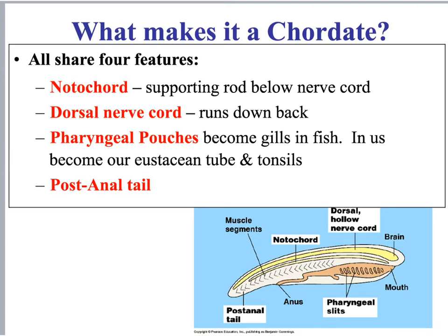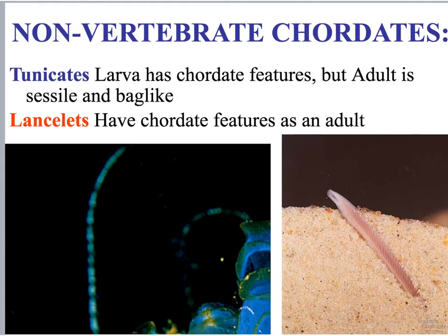If you recall when we did the comparative anatomy to prove evolution's existence, we saw that all embryos share similar features, and one of those similar features was the post-anal tail. We mentioned before that there are a couple of chordates that are not vertebrates. Examples are tunicates and lancelets.